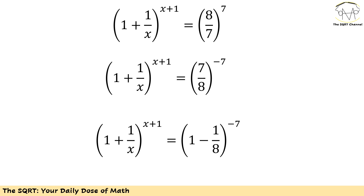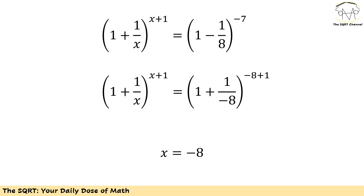Now 7/8 can be written as 1 minus 1/8, keeping negative 7 as the power. I am going to write minus 1/8 as plus 1 over negative 8.